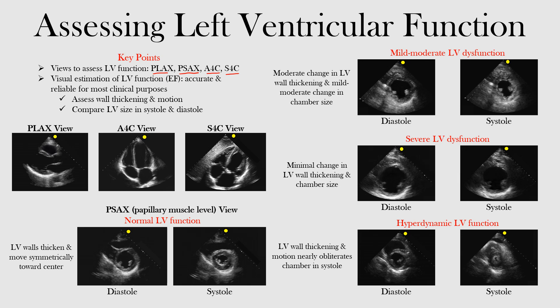Let's look at these views. We have the parasternal long axis view, in which we can see the left ventricle here. Then we have the apical four chamber view with our left ventricle cavity, and we also have the subcostal four chamber view where you can see the left ventricle as well.